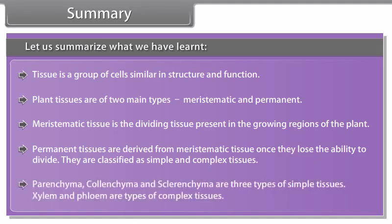Let us summarize what we have learned. Tissue is a group of cells similar in structure and function. Plant tissues are of two main types: meristematic and permanent. Meristematic tissue is the dividing tissue present in the growing regions of the plant. Permanent tissues are derived from meristematic tissue once they lose the ability to divide, and are classified as simple and complex tissues. Parenchyma, collenchyma and sclerenchyma are three types of simple tissues. Xylem and phloem are types of complex tissues.